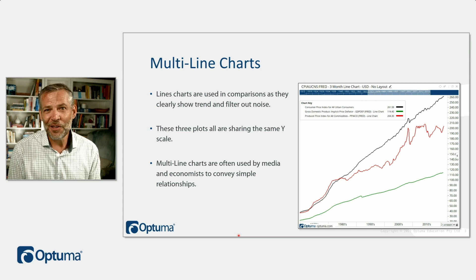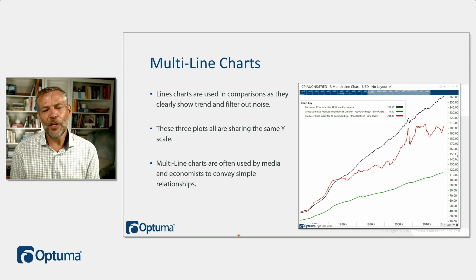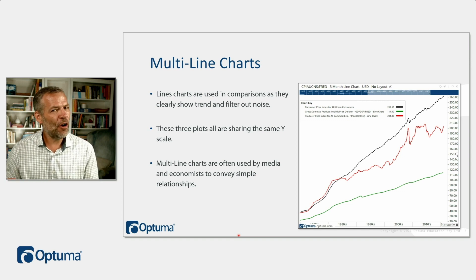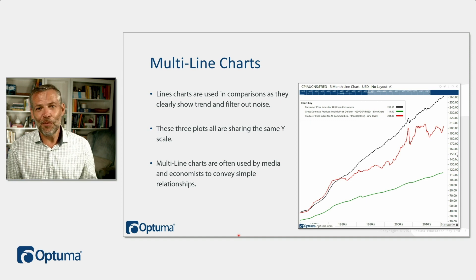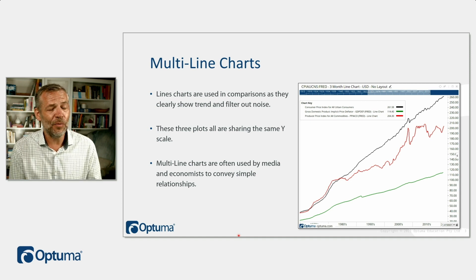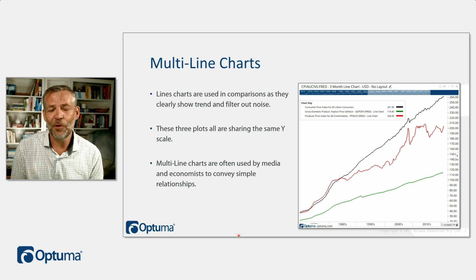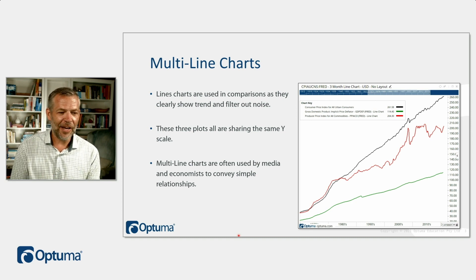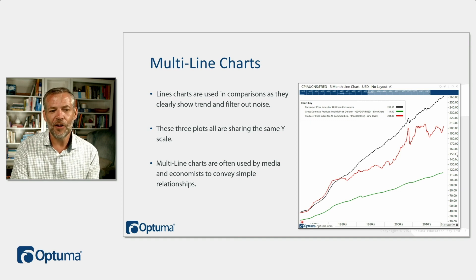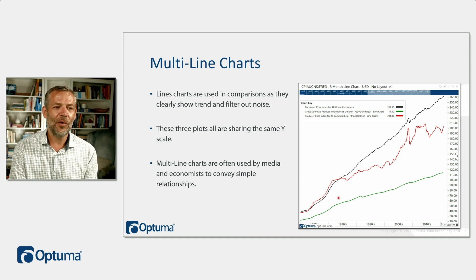Typically we use line charts for anything economic, because it's only one number at the end of a long period. Most of these are quarterly, so we're only getting four data points per year. We line those up and by the scale here we can see we're going back to the 1970s showing these values for the US.